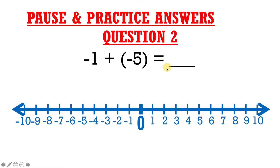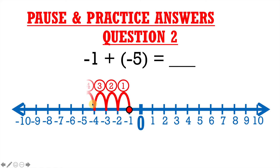Number 2: negative 1 plus negative 5 equals blank. Negative 1 is our starting point, so we'll put a point at negative 1. Our second number is negative 5, which means we're going five spaces to the left from negative 1 — 1, 2, 3, 4, 5 — and we land on negative 6. Therefore, our final answer is negative 6.